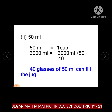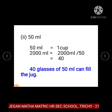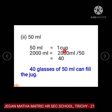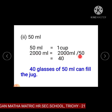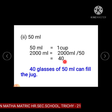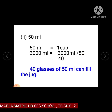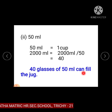Subdivision 2: 50 ml. 50 ml is equal to 1 cup. So, 2000 ml divided by 50 ml equals 40 glasses. Therefore, 40 glasses of 50 ml can fill the 2 litre jug.